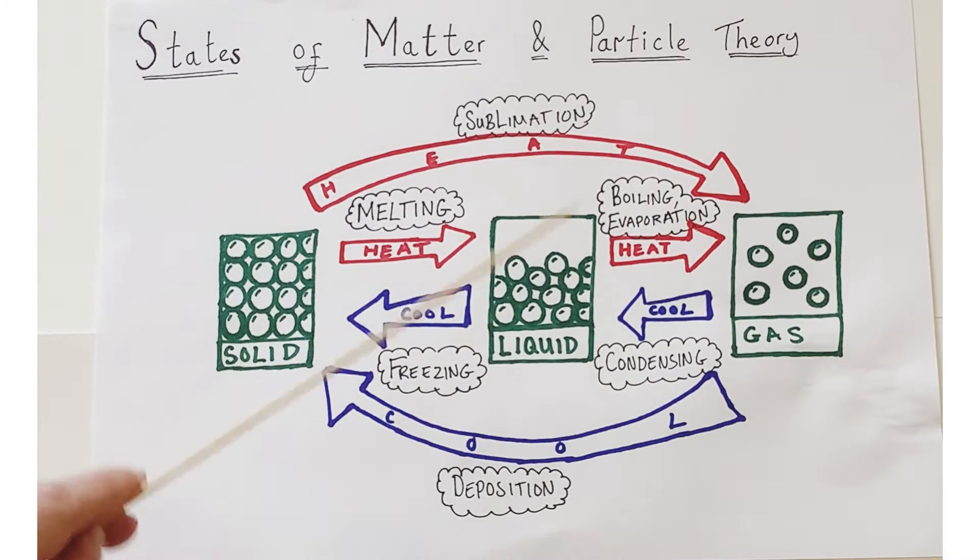Changing from solid to liquid to gas and back again. These are the changes in state. I'm going to give you the names of those changes in state. So when you sufficiently heat a solid to change it into a liquid, we call that phase change, that state change, melting.